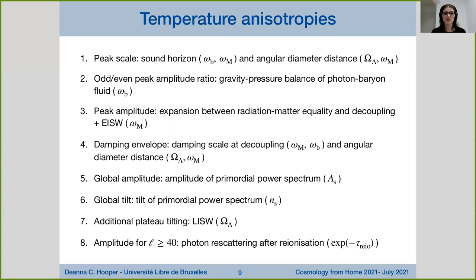The second effect is the ratio between the odd and even peak amplitudes. The even and odd peaks are slightly different, and this ratio comes from the interplay between the gravitational force pulling things in and the pressure pushing things outwards in the photon-baryon tightly coupled fluid. This effect is completely determined by the amount of baryons in the universe. The third effect is the overall peak amplitude, determined by the amount of expansion between radiation-matter equality and decoupling, also affected by the early integrated Sachs-Wolfe effect.